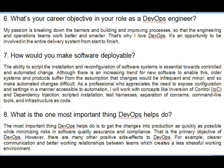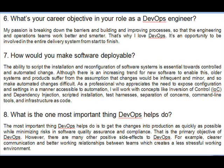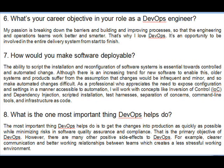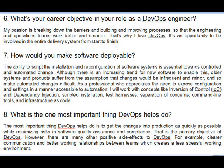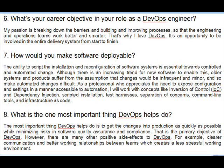Question 8: What is the one most important thing DevOps helps do? The most important thing DevOps helps do is to get changes into production as quickly as possible while minimizing risks in software quality assurance and compliance — that is the primary objective of DevOps. However, there are many other positive side effects, for example clearer communication and better working relationships between teams, which creates a less stressful working environment.